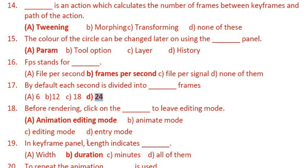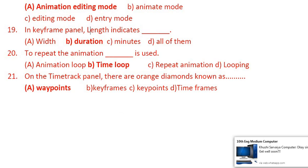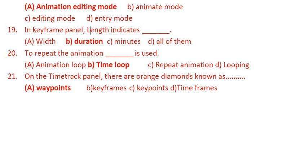Question 17: Before rendering, click on which button to leave editing mode? You have to click on the animation edit mode button — the red-color man icon — so it will become the green-color man. Question 18: In the keyframe panel, length indicates duration. Question 19: To repeat the animation, the method used is called time loop — it repeats the same action, looping round and round. Question 20: On the time track panel there are orange diamonds, known as wave points. Remember the term wave point. That completes the MCQs of this chapter.